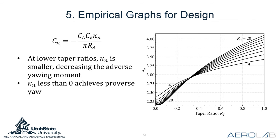Finally, we need kappa n to find the yawing moment of an untwisted wing with ailerons. A graph of kappa n is given for multiple aspect ratios and taper ratios. At lower taper ratios, kappa n is smaller, which decreases the adverse yawing moment. If kappa n is less than zero, the wing would provide proverse yaw, but with these tested wing configurations, proverse yaw isn't possible.